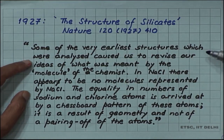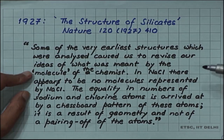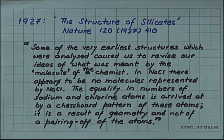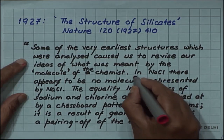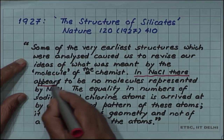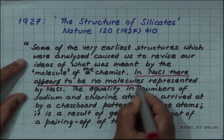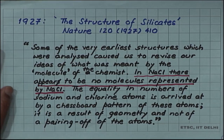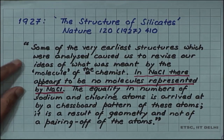Some of the very earliest structures which were analyzed caused us to revise the ideas of what was meant by a molecule of the chemist. In sodium chloride there appear to be no molecules represented by NaCl, because 6 chlorine are all equidistant to sodium — so it cannot be forming a molecule with just one of them.